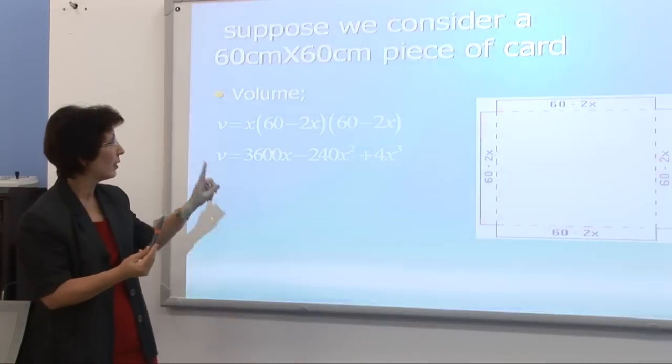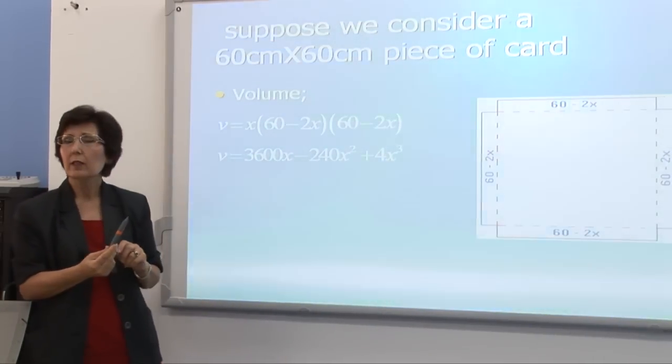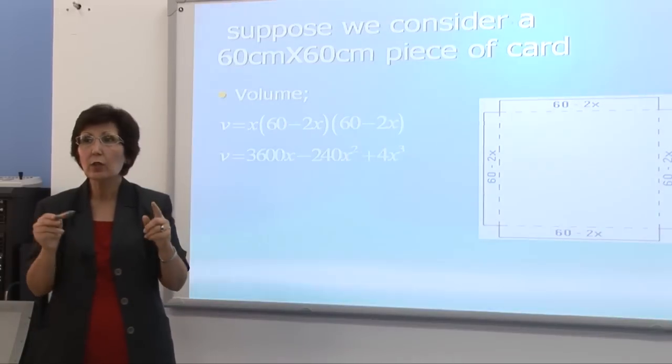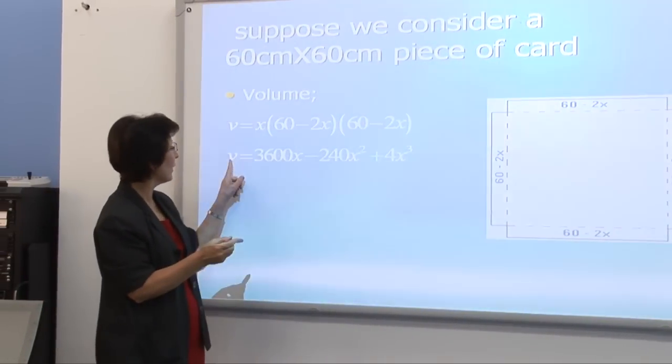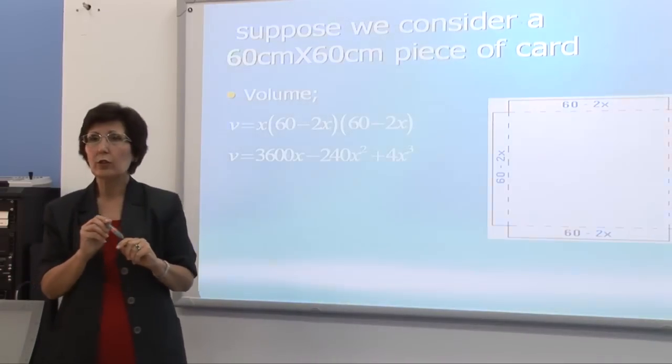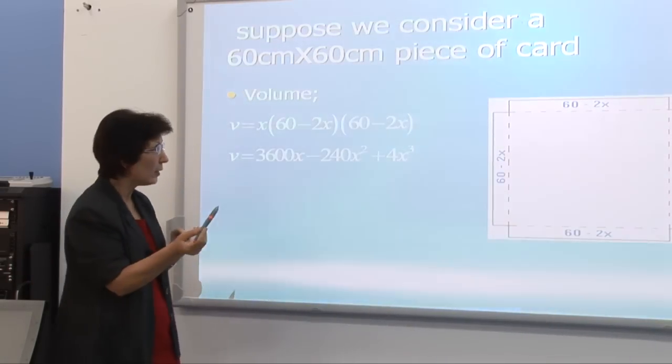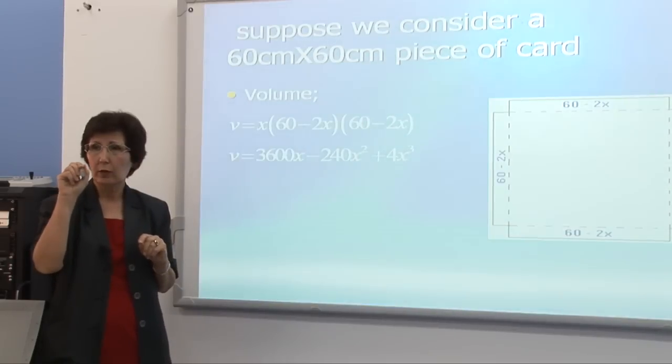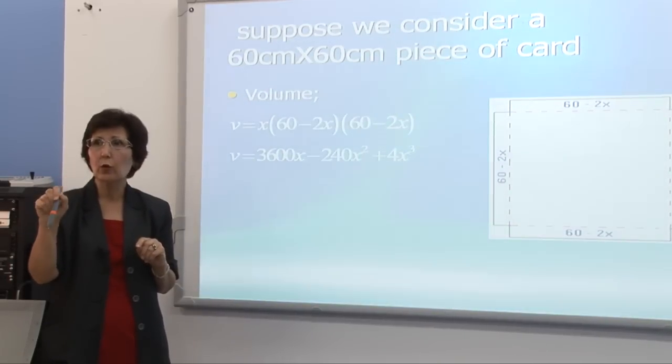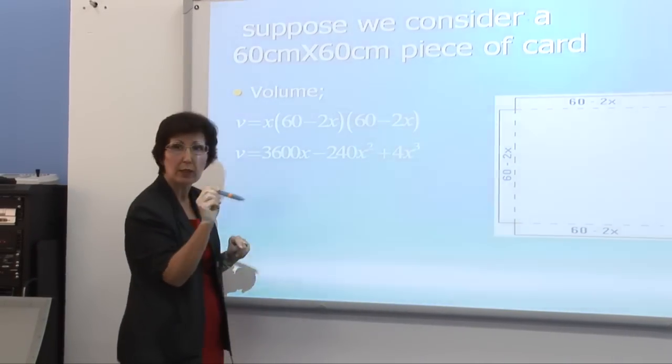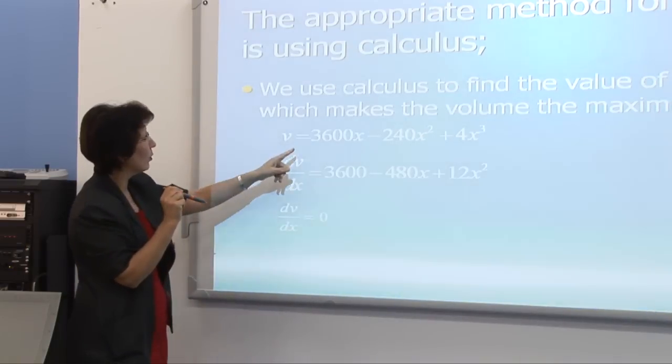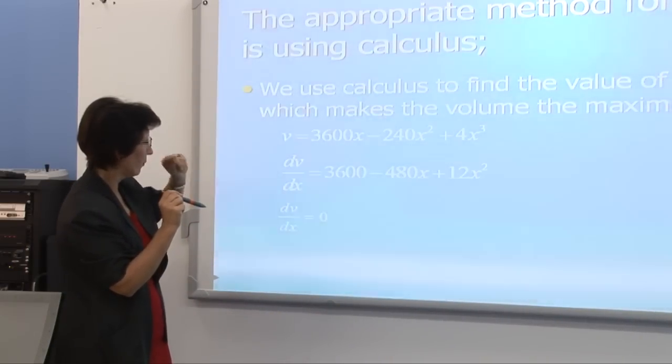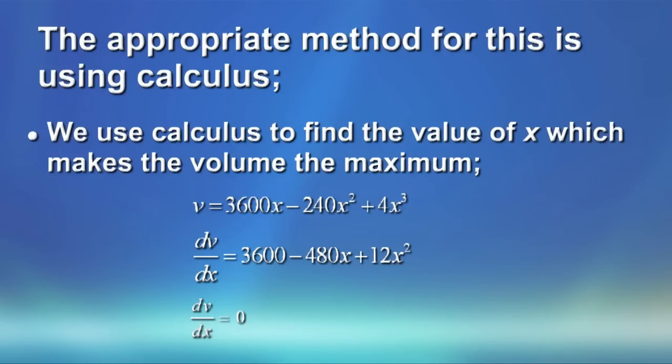Now we want to find the value of x which makes v maximum. For this, we use calculus. We know if we find the derivative of a function and equal it to zero, then that will enable us to find the value of the variable which makes that function maximum or minimum. So what do we do? We have created a problem, we carry on, and we are using the calculus. This is our function. We find the derivative.